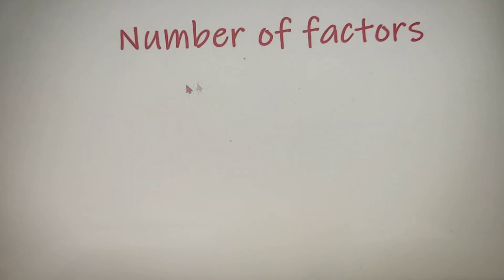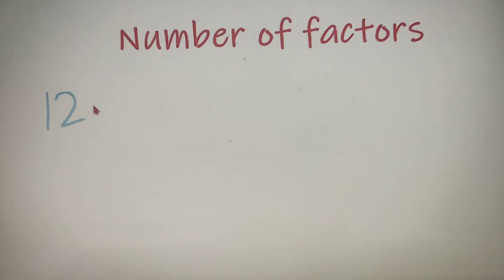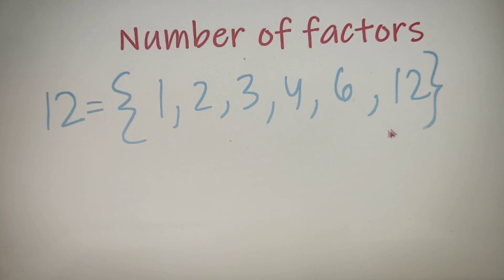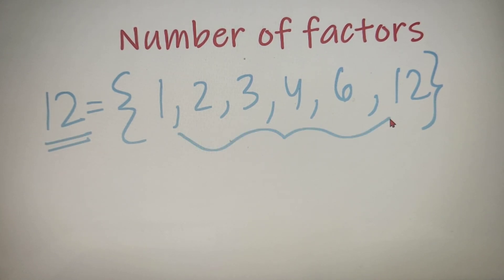A factor of a number is a number which is less than or equal to it and the original number is divisible by it. So suppose if I have a number, let's say 12, then all the factors of 12 are as follows: 1, 2, 3, 4, 6, and 12. All these numbers are factors of 12 because 12 is divisible by all of them.